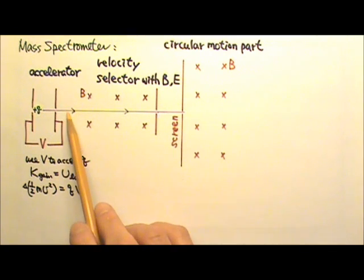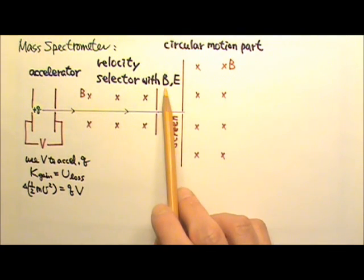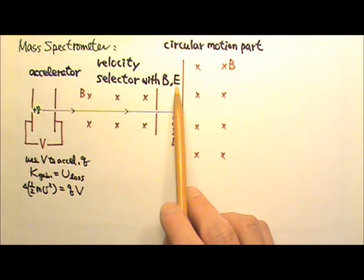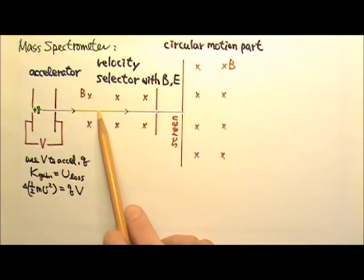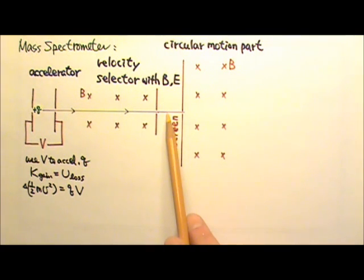Then the charge enters a region with both a uniform magnetic field and a uniform electric field. In this region, only those charges with a certain velocity can go straight through the region undeflected.